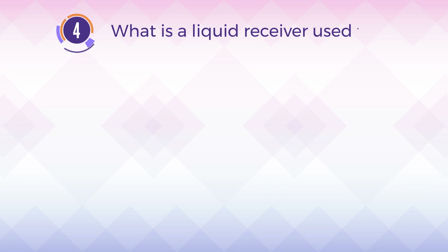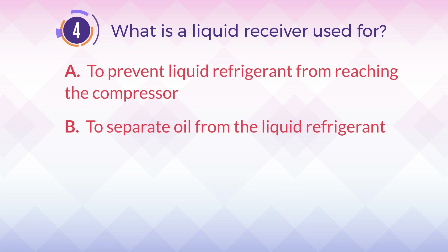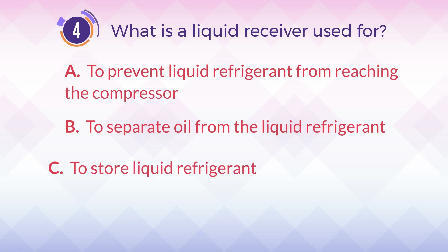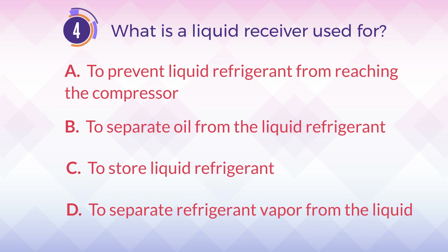Number 4. What is a liquid receiver used for? A. To prevent liquid refrigerant from reaching the compressor. B. To separate oil from the liquid refrigerant. C. To store liquid refrigerant. D. To separate refrigerant vapor from the liquid.